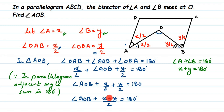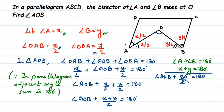Substituting X plus Y = 180: angle AOB plus 180 by 2 equals 180 degrees. 180 divided by 2 is 90. So angle AOB plus 90 equals 180 degrees. Transposing 90 to the other side: angle AOB equals 180 minus 90, which equals 90 degrees. So angle AOB is 90 degrees. I hope this question is clear — drop a comment if you have any doubts. Thank you for watching.